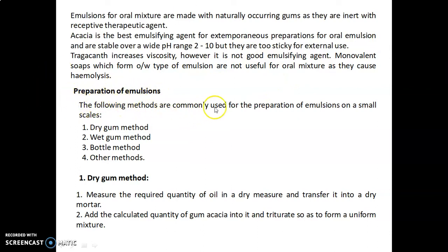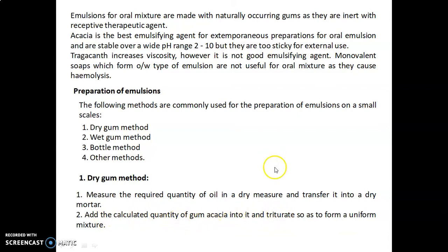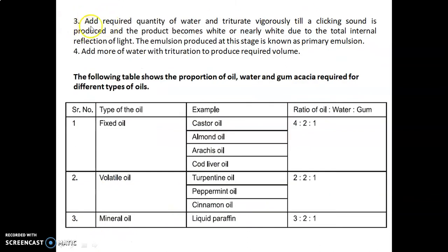For preparation of emulsions on a small scale, the following methods are commonly used: dry gum method, wet gum method, bottle method, and other methods. In the dry gum method, first measure the required quantity of oil in a dry measure and transfer it into a dry mortar. Then add the calculated quantity of gum acacia and triturate to form a uniform mixture. Add the required quantity of water and triturate vigorously until a clicking sound is produced and the product becomes white or nearly white due to total internal reflection of light. The emulsion at this stage is known as the primary emulsion. Then add more water with trituration to produce the required volume.